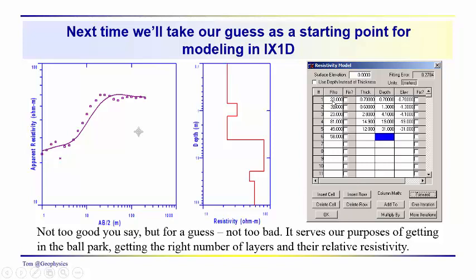You do have some leeway in there, but we do know that the bedrock can't be down here at 100 meters. So we just plugged in the resistivities that we came up, 23, 32, 23, 81, 49, 58. We put in the depths that we came up just using the inflection points dividing by two. And well, I would say that's not really such a bad guess because we've got a fitting error of about 8.3 percent, not too bad for just a rough guess.